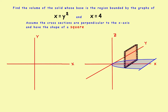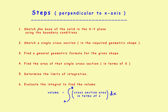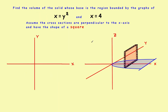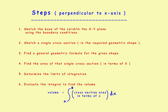Step one: sketch the base of the solid in the XY plane using the boundary conditions. Sketch the parabola x equals y squared — it's symmetric about the x-axis. Then restrict it with the vertical line x equals 4. Shade the region from x equals 0 to x equals 4. That's step one complete.